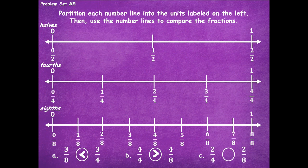For two fourths and two eighths — you might think two eighths has to be bigger because eight is a bigger number, but let's check the number line. Two fourths is here and two eighths is here. I was wrong! Good thing we have the number lines to help. Two fourths is a greater distance from zero, so two fourths is greater than two eighths. That's one problem on your problem set done already!